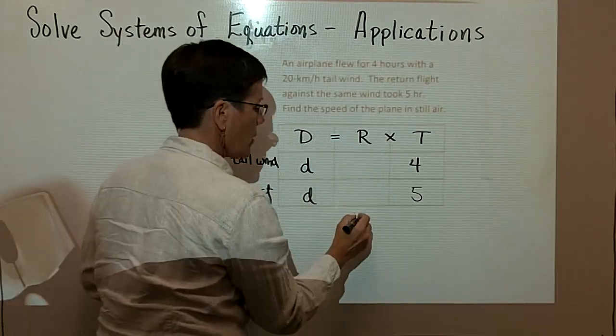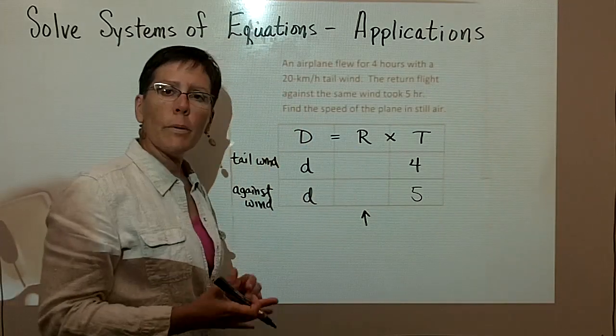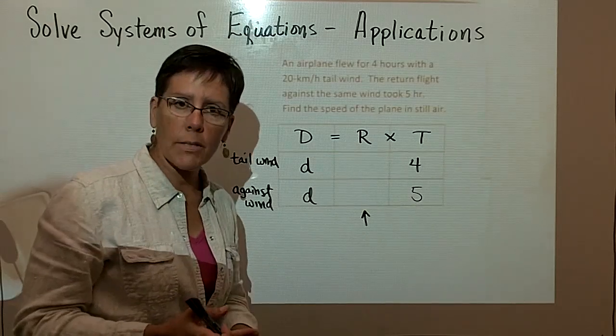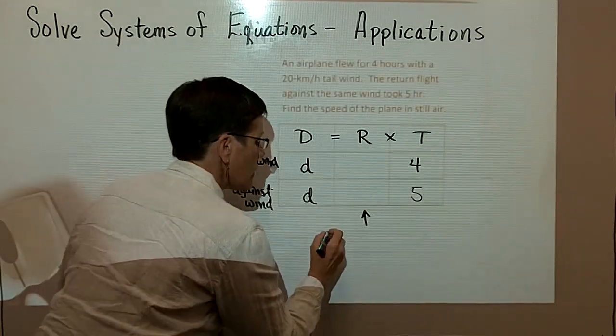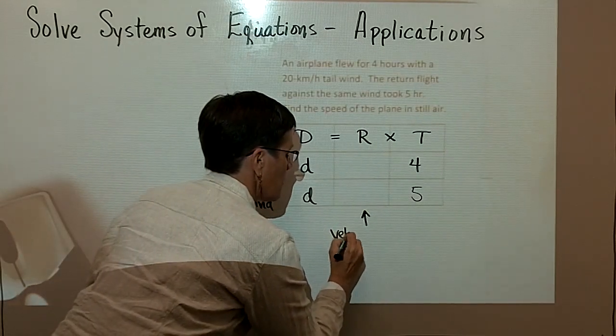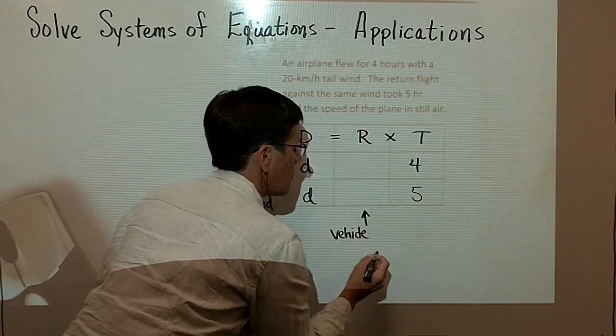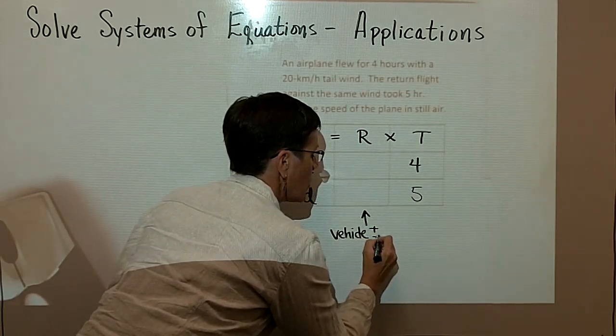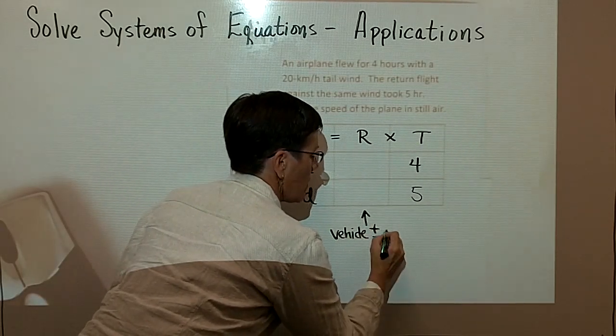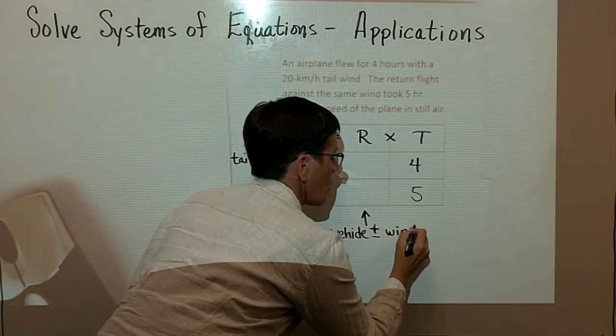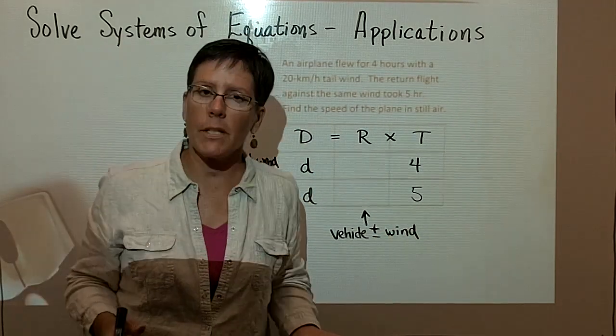This column right here is the tricky column. Whether it be a plane or a canoe or a bicycle, it is always the vehicle speed that you put into this column first. And then you add or you subtract the wind or the current or whatever the case may be.